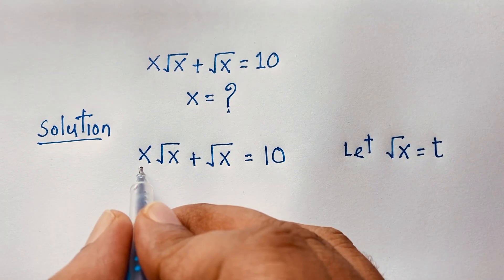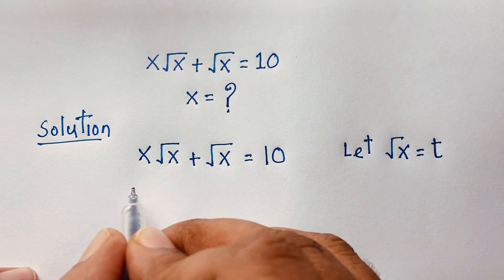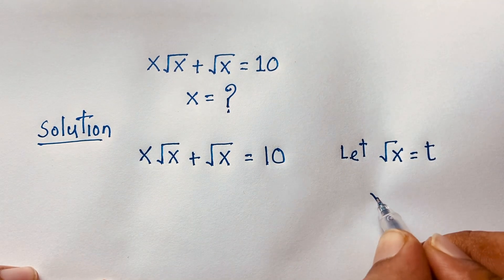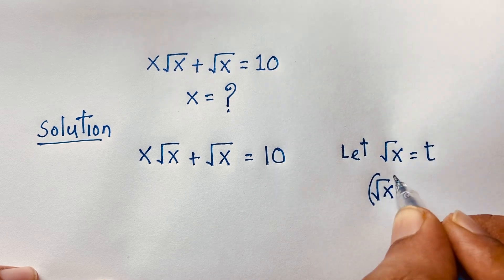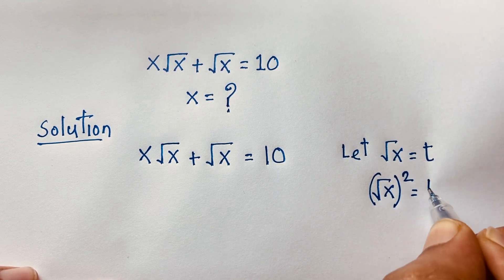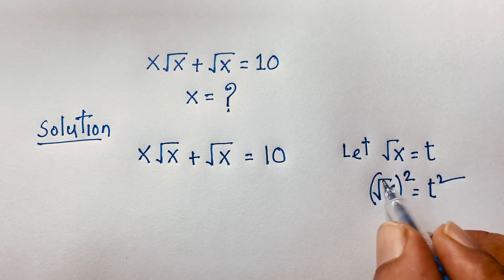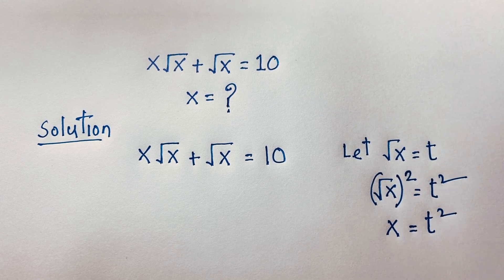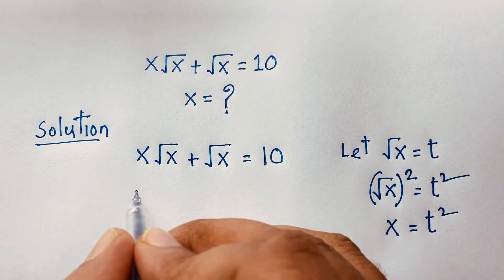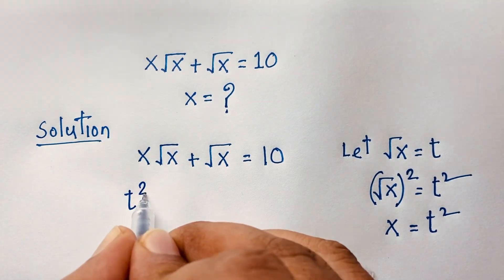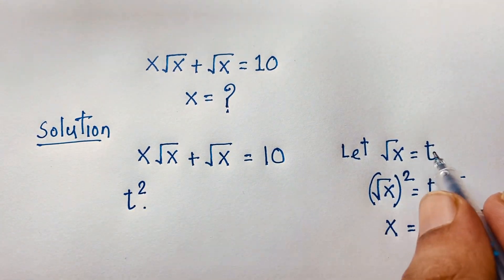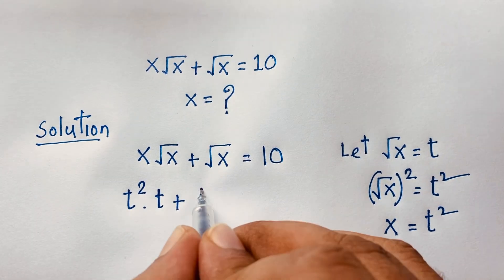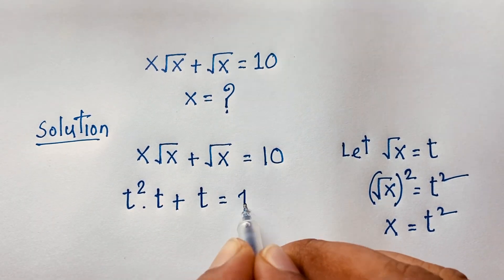So we let square root x equal t. If we square both sides, the square root cancels and we find x is equal to t squared. So x becomes t squared, and square root x becomes t. We have t squared times t plus t equals 10.